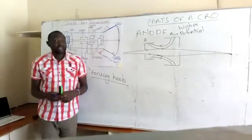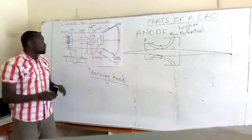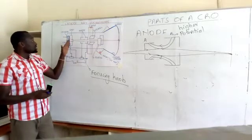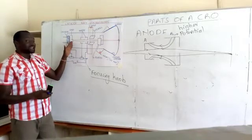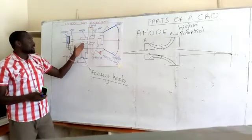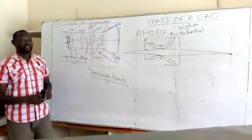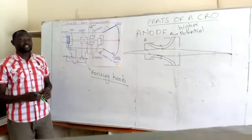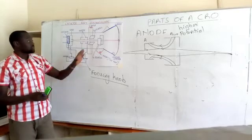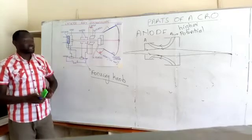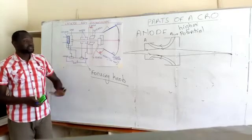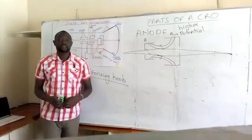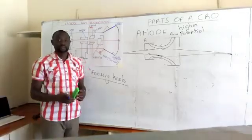So that is the electron gun. We have seen the cathode, the grid, and the anode and its functions. In our next part, we'll be looking at the deflecting system and the screen. Thank you.